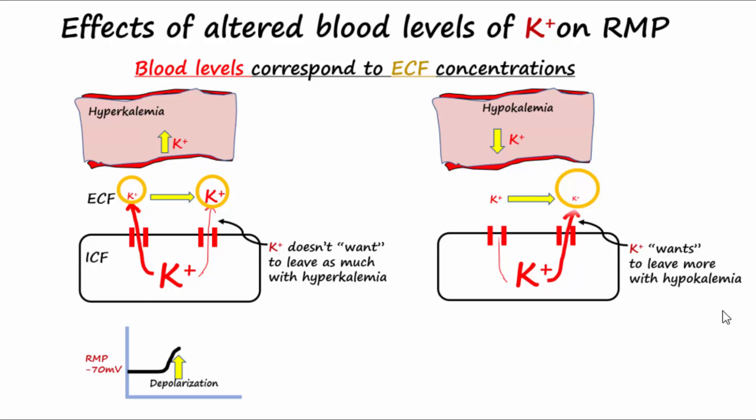How would a positively charged ion like potassium leaving the cell affect the resting membrane potential? Greater potential for potassium to leave would cause hyperpolarization.